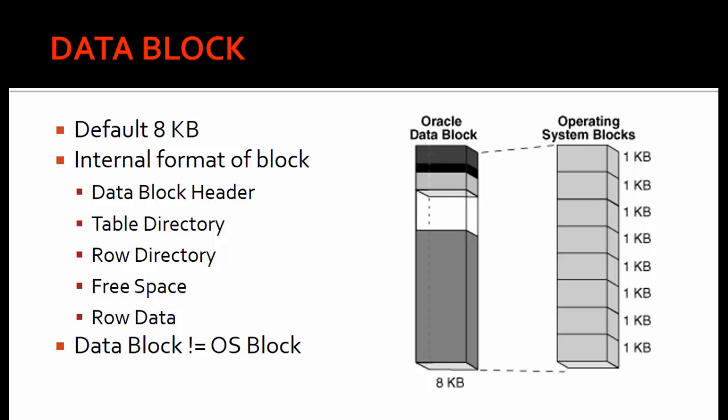Now the internal format of the block — what exactly is inside an Oracle data block. In the Oracle data block we have a data block header. This data block header stores information about the data block: what data it contains, and it also contains the latest SCN numbers. These SCN numbers are important to define when the data block was last updated. Having the latest SCN on the data block header helps Oracle database to operate very consistently.